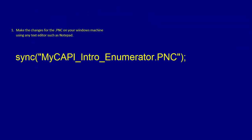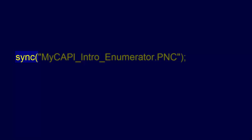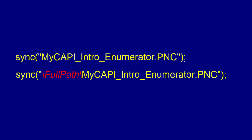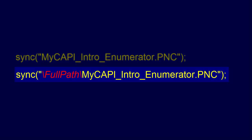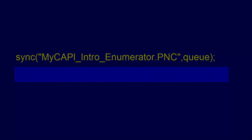You can launch synchronization in CS Pro logic using the sync function, which takes the name of the synchronization file as the argument. If the file name is a full path, the synchronization will look for the file in the specified path. Otherwise, it looks for the .pnc file in the same directory as the .pen file, and if it does not find it there, it searches for it among the .pnc files installed in the synchronization menu. The function sync has an optional second argument, Q, that will wait to start the synchronization after data entry is complete. This can be useful because during data entry the questionnaire being entered is not yet saved. Q tells the sync function to synchronize after the questionnaire has been saved.